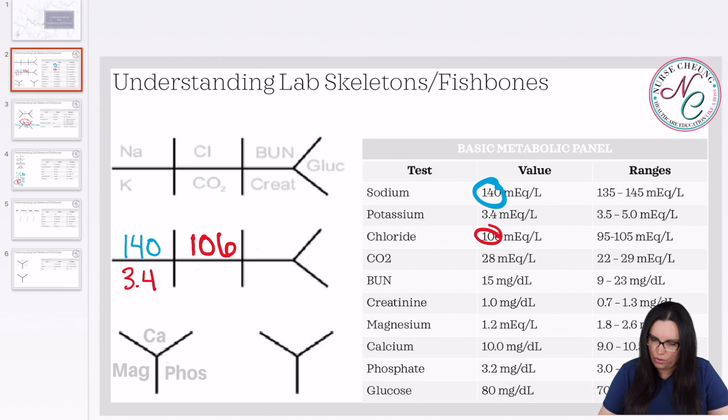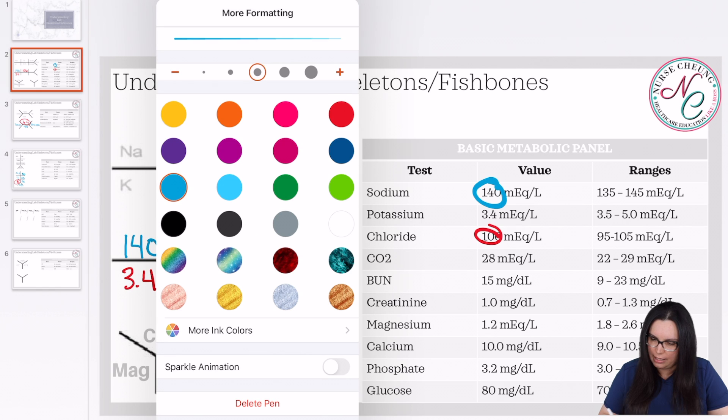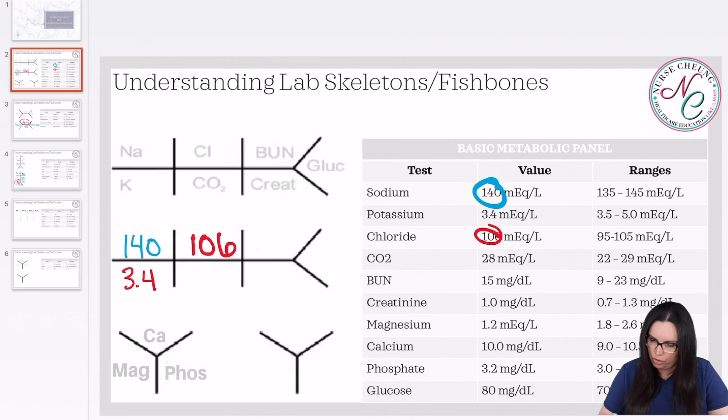We're going to look at our CO2. That's normal. CO2 is normally 22 to 28 per these lab values. So I'm going to write that in here. Our BUN is 15. That's beautiful. Our creatinine is 1. And our glucose is 80. So we just filled out the first portion of our fishbone for our basic metabolic panel.